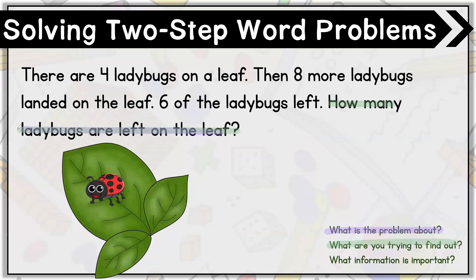Let's read this one more time. There are four ladybugs on a leaf. Then, eight more ladybugs landed on the leaf. Six of the ladybugs left. How many ladybugs are left on the leaf? What information is important? I know that there were four ladybugs on the leaf, eight more ladybugs landed, and then six of the ladybugs left. So there's a lot of information for us to cover.